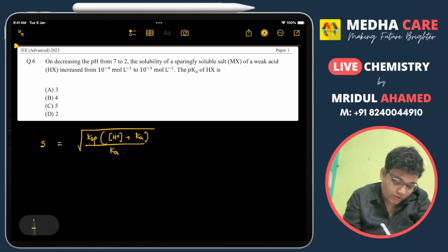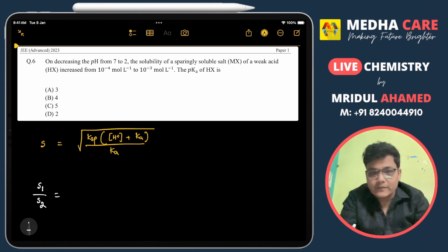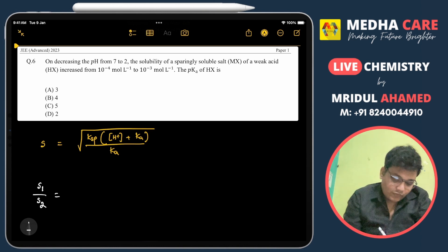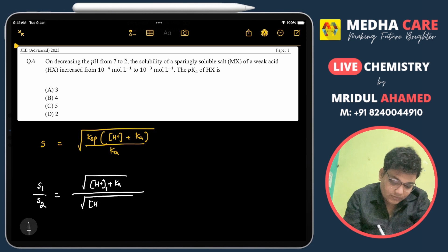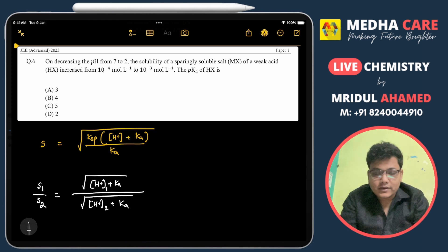Now to solve this problem, I'll use this equation. I'll write S1 divided by S2, where S1 is the solubility at pH 7 and S2 is the solubility at pH 2. So it equals square root of ([H+]1 plus Ka) divided by square root of ([H+]2 plus Ka). The Ksp will be cancelled and Ka will be cancelled.